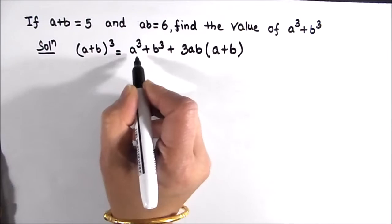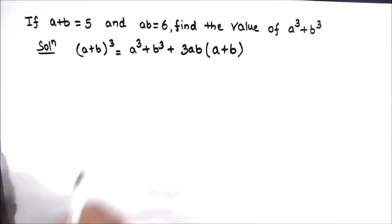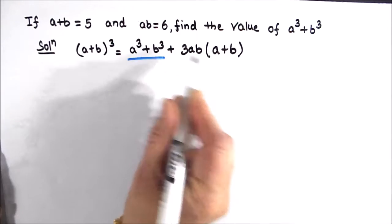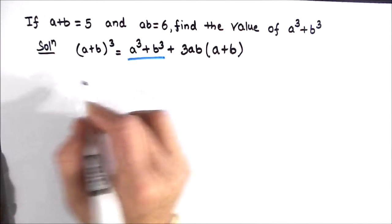As we need to find the value of a cube plus b cube, we are going to keep this value on one side and will transpose all the other values on the other side.